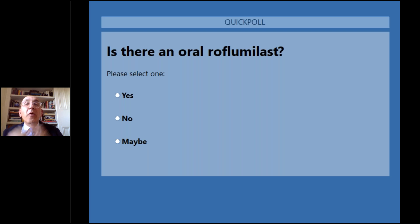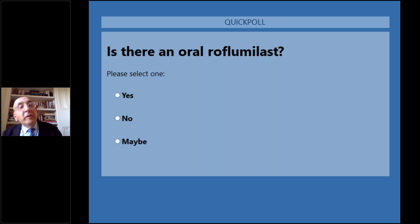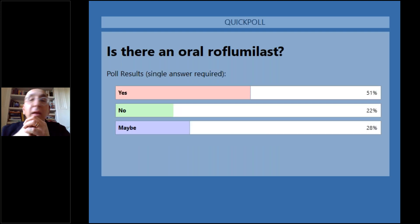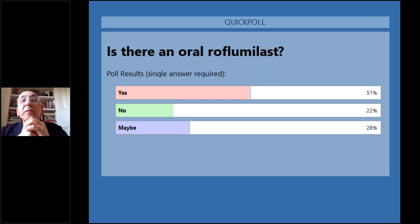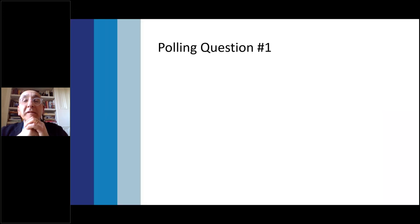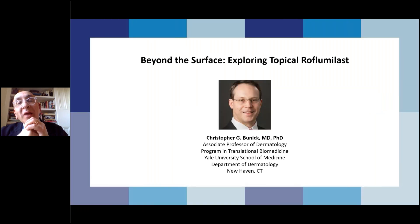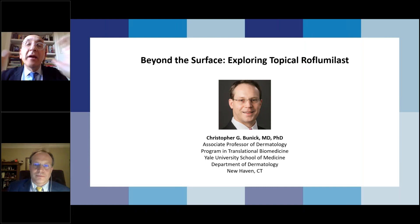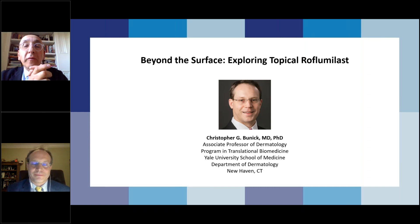Is there an oral roflumilast? We all know about the topical roflumilast and we're going to learn more tonight. It's been approved and it's been around now for a while. How about — is there oral roflumilast? Where did this molecule come from? The options are yes or no. The answer: more than the majority said yes. And yes, there is actually oral roflumilast. You're going to hear this from Dr. Chris Buenick. Our next speaker is really going to explore topical roflumilast and tell us all about where it came from and the studies with both topical and oral roflumilast.